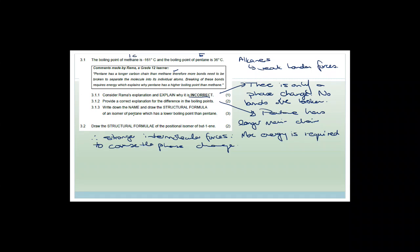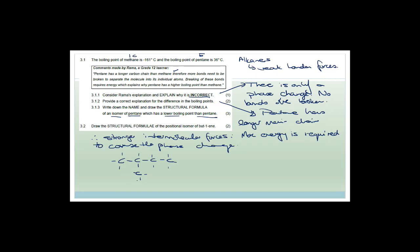Write the name and draw the structural formula of an isomer of pentane that will have a lower boiling point. We could say 2-methylbutane. Remember, an isomer has the same number of carbons and hydrogens, so you need C5H12 — 5 carbons and 12 hydrogens. Any isomer of pentane which has a shorter main chain will have a lower boiling point, because there are weaker London forces.